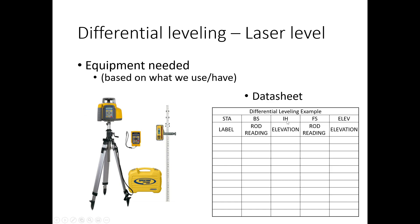The back sight and foresight refer to rod readings, whereas the instrument height and elevation are actual elevations — that's how we calculate them.